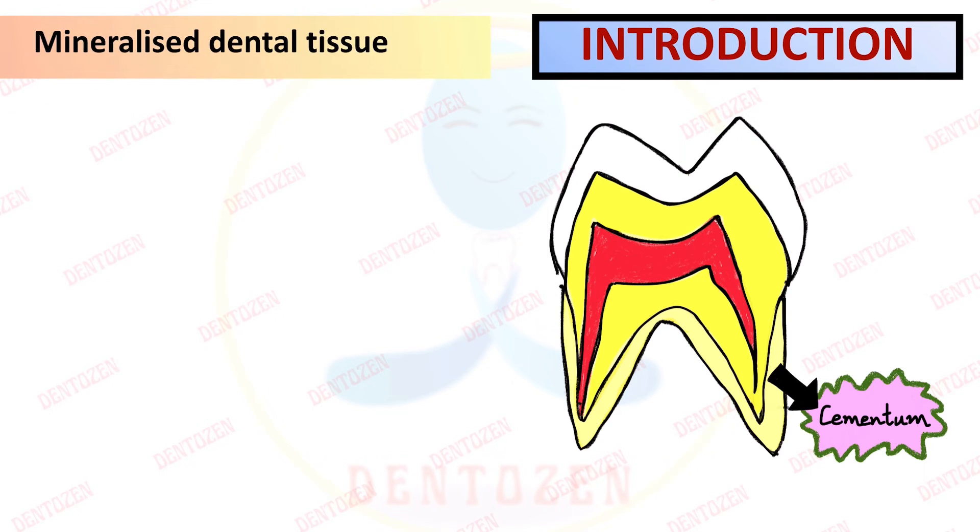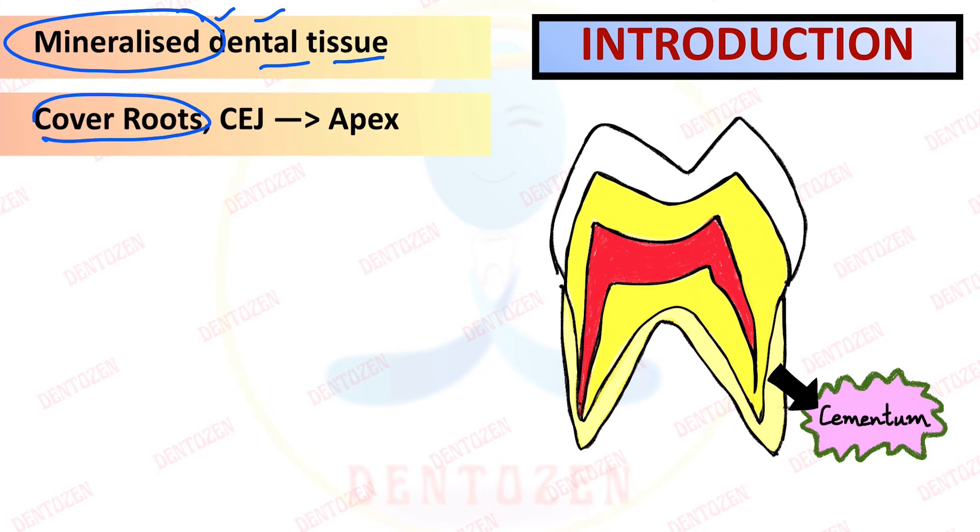Introduction of cementum. What is cementum? It is a mineralized dental tissue made from mineral. It covers the roots of the teeth. Where does it start? From the cervical region at the junction between the enamel and cementum, known as cementoenamel junction, and it continues to the apex of the root of the tooth. So it grows from cementoenamel junction to apex.